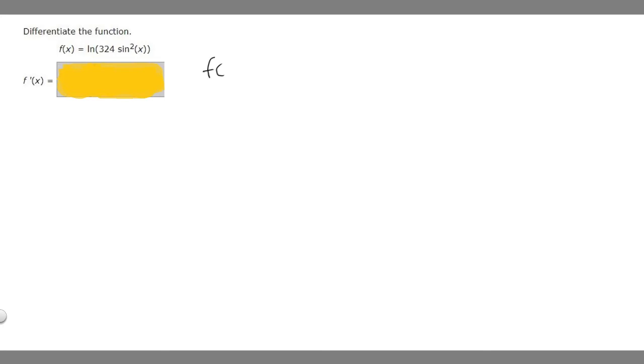So let's just first rewrite our problem. So we have f of x is equal to the ln of 324 times sine squared of x. And so what we're going to do here is use the chain rule. So the chain rule tells us that we take the derivative of our outside with respect to our inside and then multiply it by the derivative of our inside.